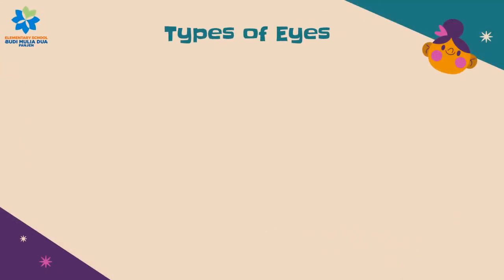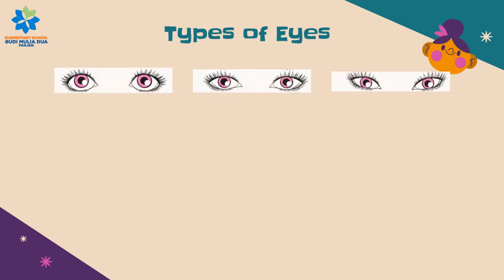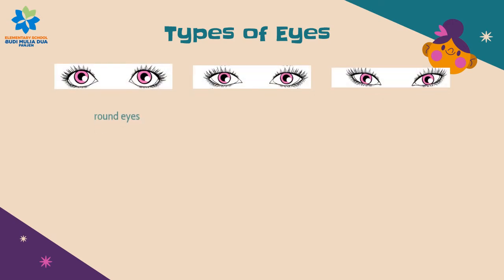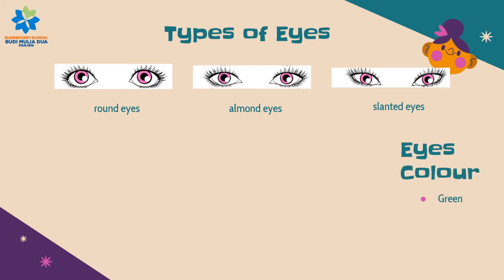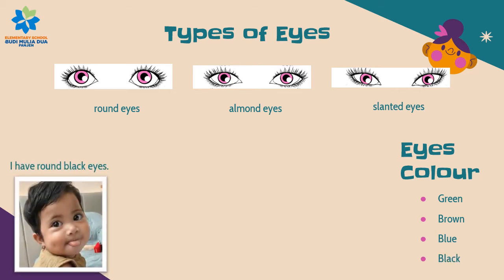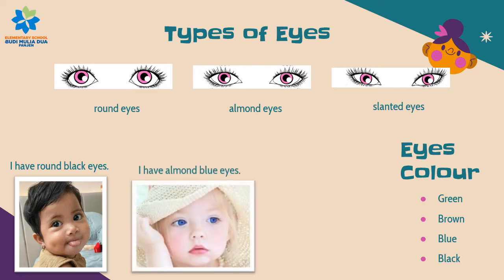There are some types of eyes, and there are some eye colors too: green, brown, blue, and black. For example, I have brown-black eyes, I have almond blue eyes.